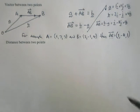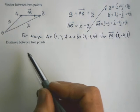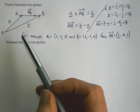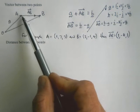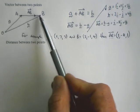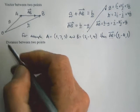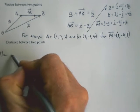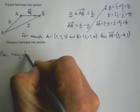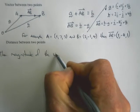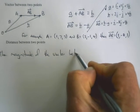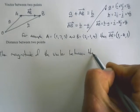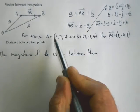This enables us fairly quickly to find the distance between two points. If we're trying to find the distance from A to B, it's just the length or the magnitude of the vector AB. So the distance between two points is simply the magnitude of the vector between them.